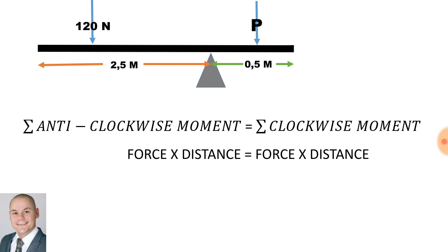Now, if we have a look at the beam on the clockwise direction, the length of the beam is 0.5 meters, and for the anti-clockwise direction, the length of the beam is 2.5 meters.